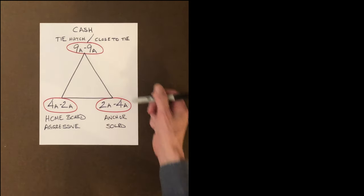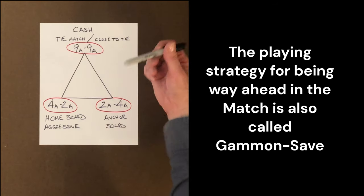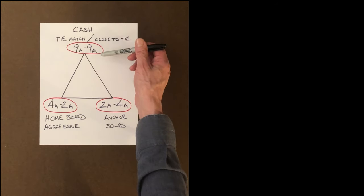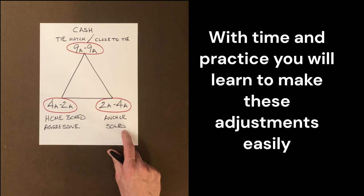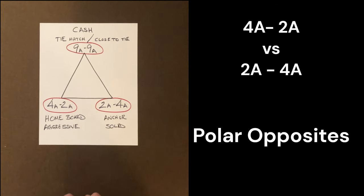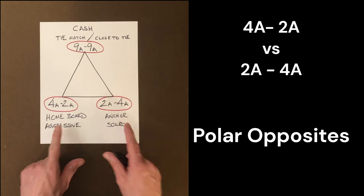And again, look what we've done for ourselves. As we gain a lead in the match and that match lead grows, we're going to start to move our strategy toward the strategy we learned for 2 away 4 away. And if you look at these two, these two strategies are polar opposites of each other. These are the extremes of how you're going to play your checkers.